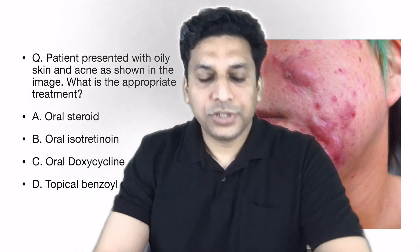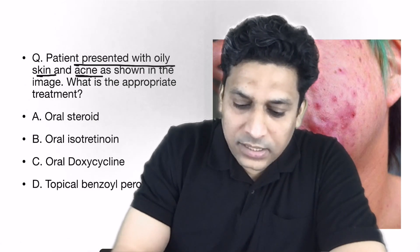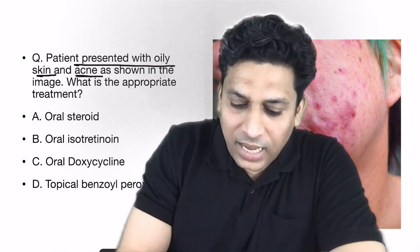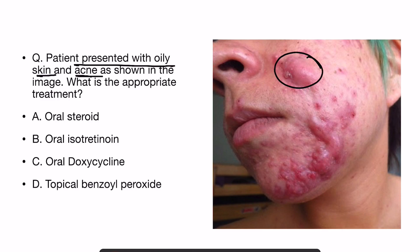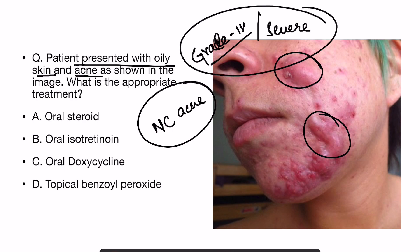Now let us discuss the question. They are asking that the patient presented with oily skin and acne as shown in the image. The acne is of which type? Yes, it is nodulocystic acne, and we all know that nodulocystic acne is also known as grade 4 or severe acne. So they are asking: what is the appropriate treatment for nodulocystic or grade 4 acne?